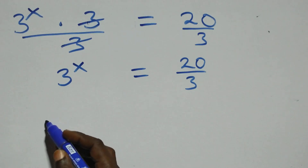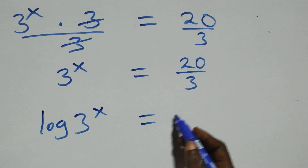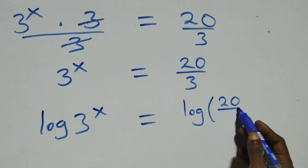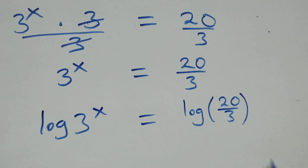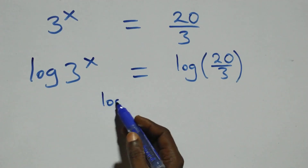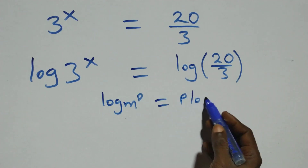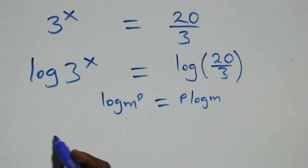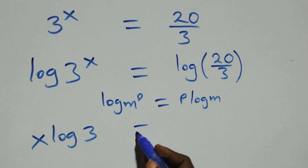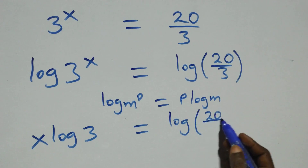Then we take the log on both sides: log 3 raised to power x equals log 20 over 3. We apply the power rule of logarithms, where log m raised to power p is the same thing as p log m. So what we have becomes x log 3 equals log 20 over 3.